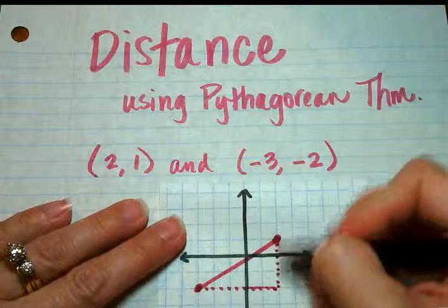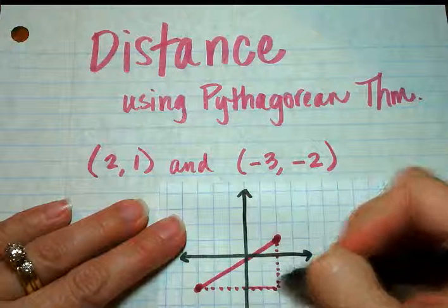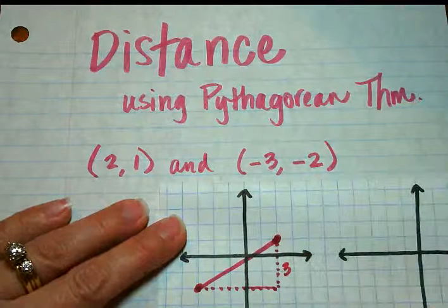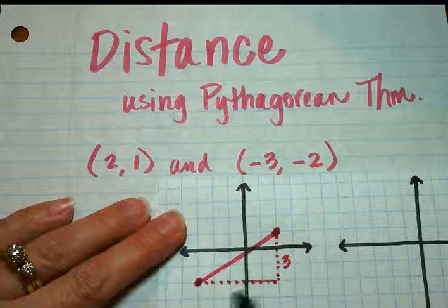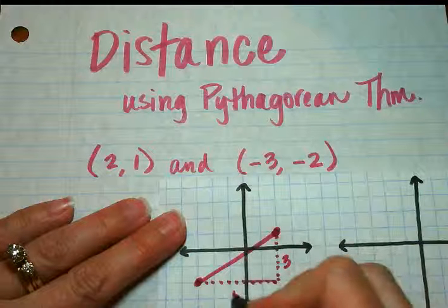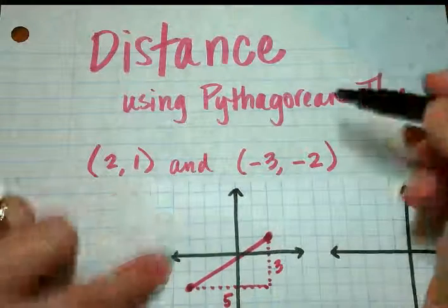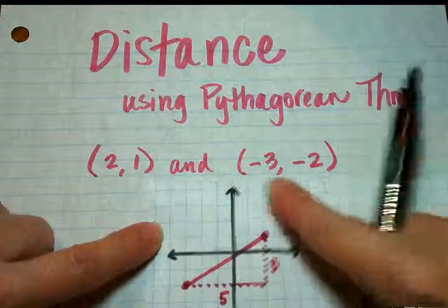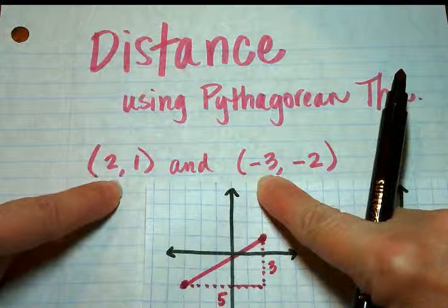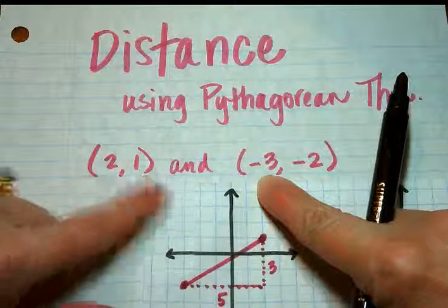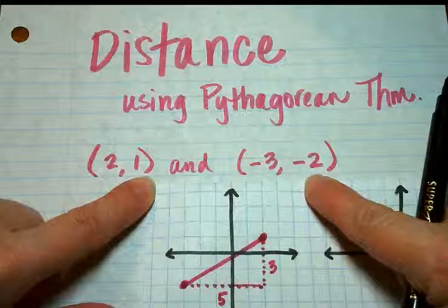So what we need to do is figure out the length of each side. So it looks like this side is 3 pieces long there. And if we look across this side, this side looks like it's 5 spaces there. And if you look at our ordered pairs, it makes sense because negative 3 and 2 are 5 spaces away from each other, and positive 1 and negative 2 are 3 spaces away from each other.